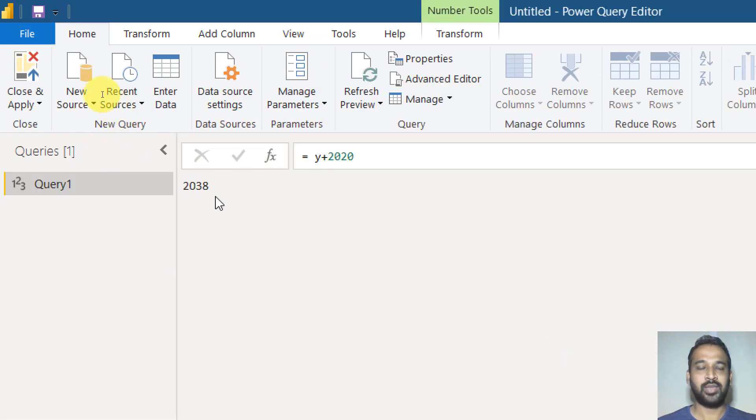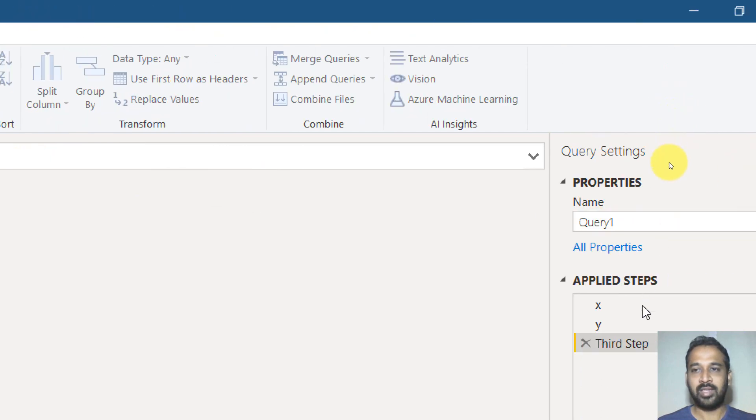So equals Y plus 2020, 20 and in as an output, I'm going to use hash the third step to tap and then done. As you can see, the output is 20, 38. Yes. Y is 18 basically and plus 2020 will give the result of 20, 38. And if you look at this step here, it gives as X, Y and this step.